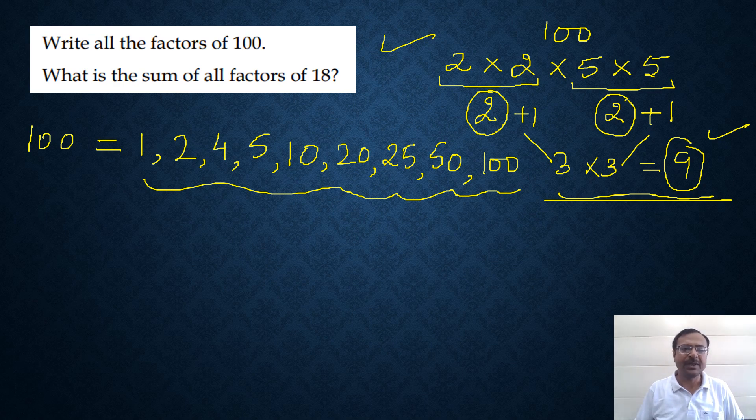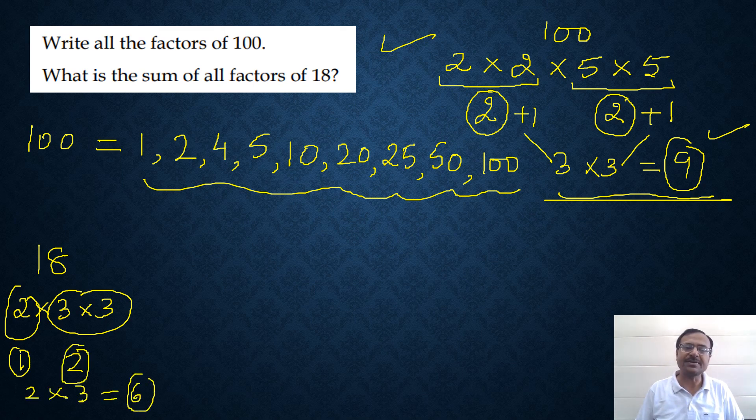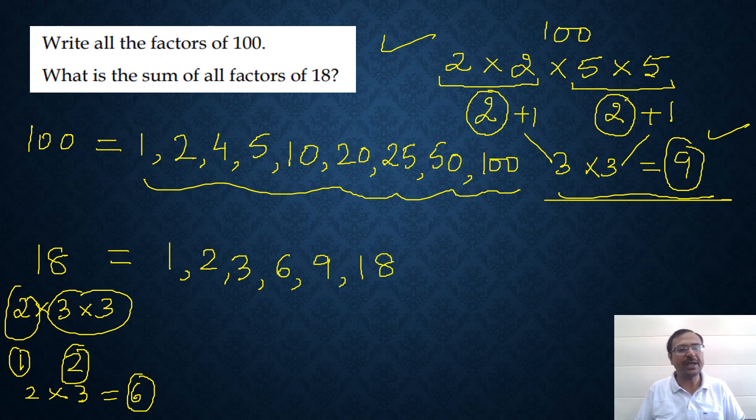Now look at the second question. He is asking us to find the sum of all factors of 18. If you do prime factorization of 18, this is 2 times 3 times 3. So there is one 2 and two 3's. If you increase this by 1, you get 2, and increase this by 1, you get 3. So there are 6 factors. And what are the factors? Factors are 1, 2, 3, and then 6, then 9, and then 18 itself. So there are 6 factors.